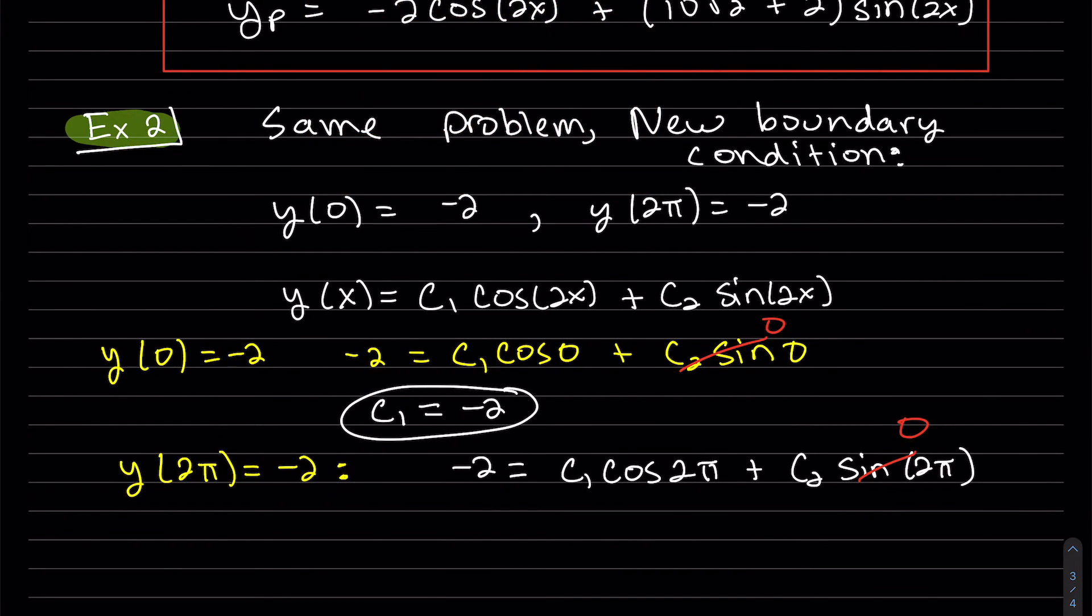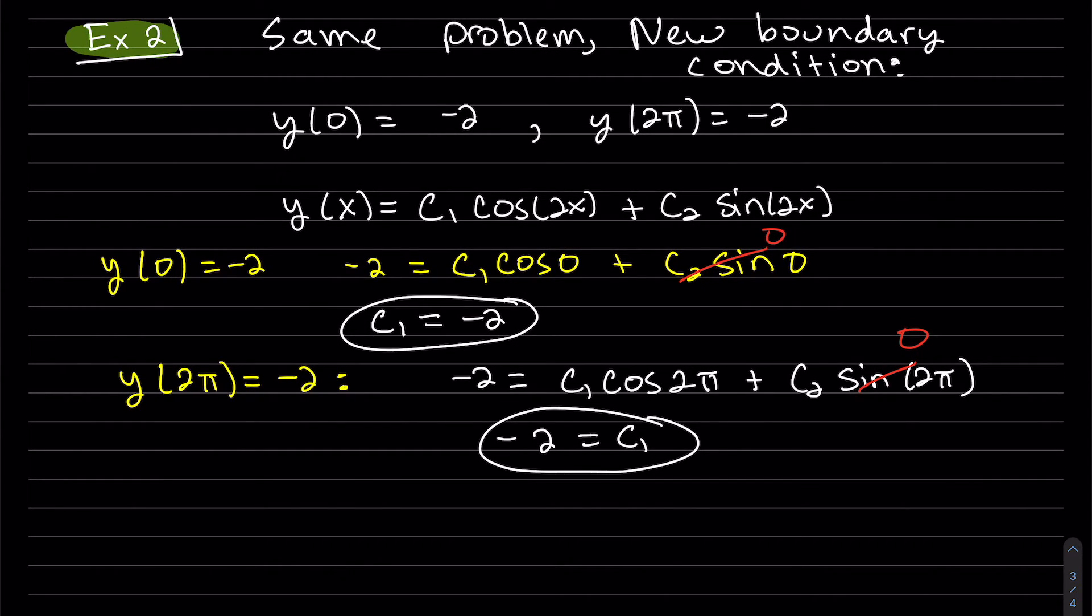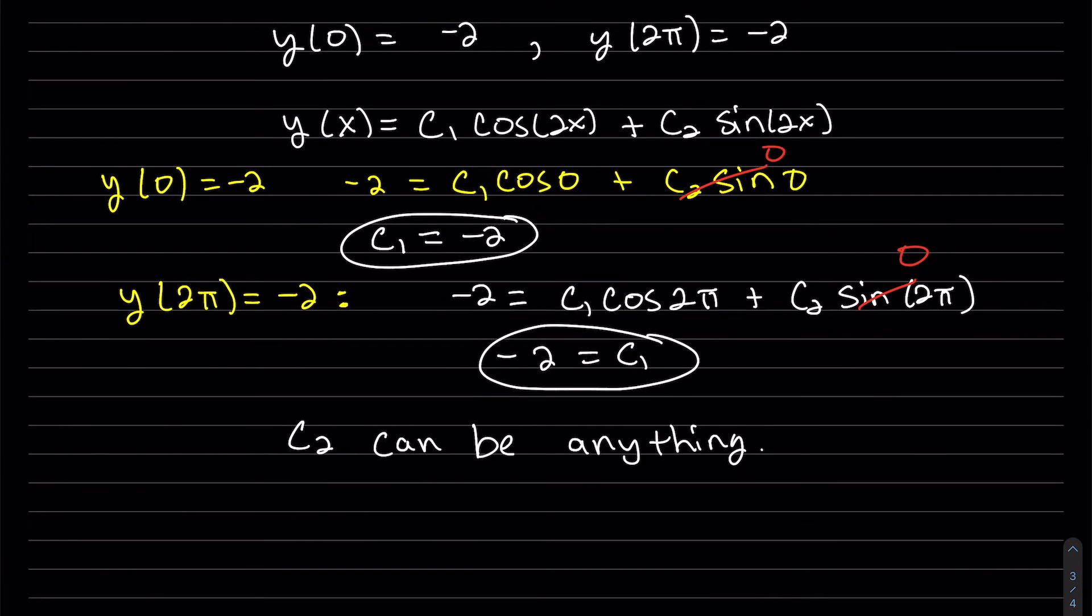This is zero. So we actually got the same condition twice. And as we can see, there is no way to solve for C2. So since we did get the same thing, there's no contradiction. But C2 can be anything. Since we didn't solve for it. It satisfies those two conditions. So any real number.